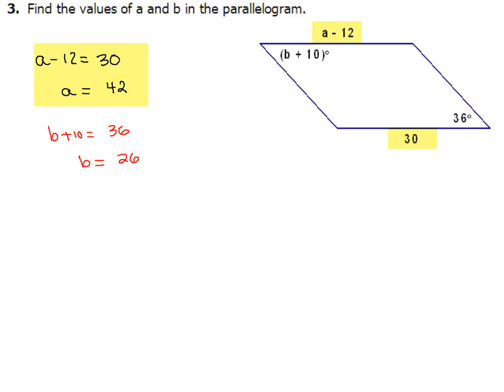So how'd you do with that? First you'll set A minus 12 equal to 30, because opposite sides in a parallelogram are equal. Then when you add 12 to both sides, you get A equals 42. Opposite angles in a parallelogram are congruent, so B plus 10 equals 36. Subtracting 10 from both sides, you get B equals 26. I'm sure you guys rocked that out.